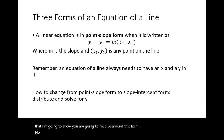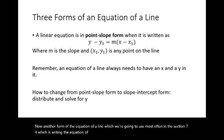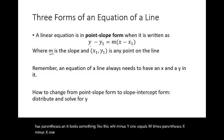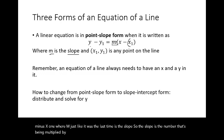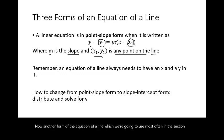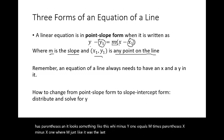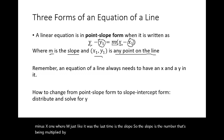Another form, used most often in section 7-4 when writing the equation of a line, is called point-slope form. It always has parentheses and looks like this: y minus y1 equals m times (x minus x1). Here, m is the slope — the number being multiplied by the parentheses — and x1, y1 are the x and y coordinates of any point on the line.